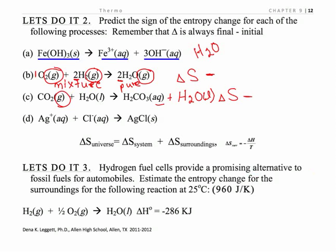Going from aqueous ions to a solid is just the opposite of dissolving — where dissolving gave a positive entropy, this process going from aqueous ions to a solid gives a negative entropy.